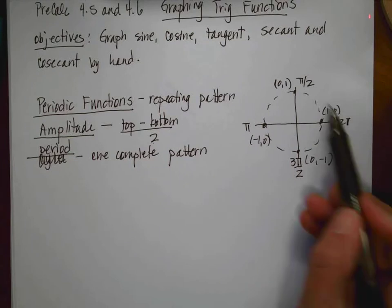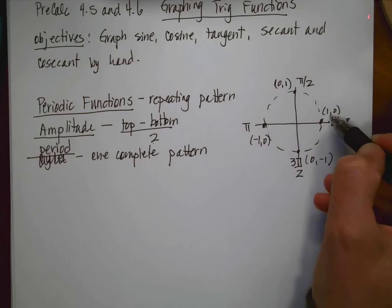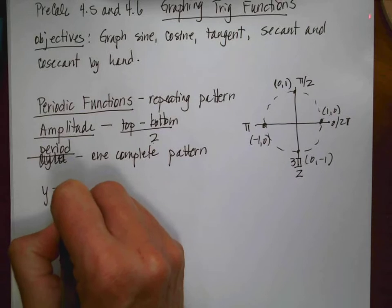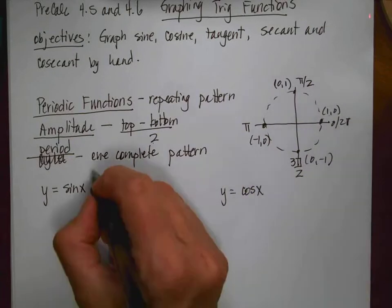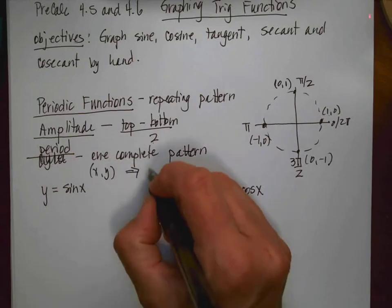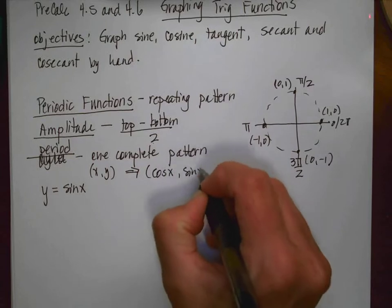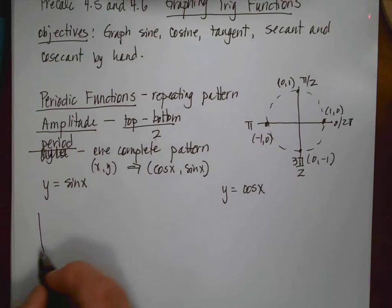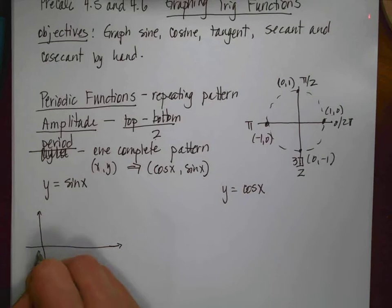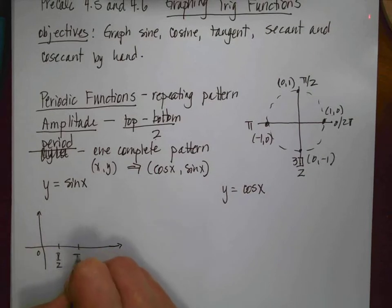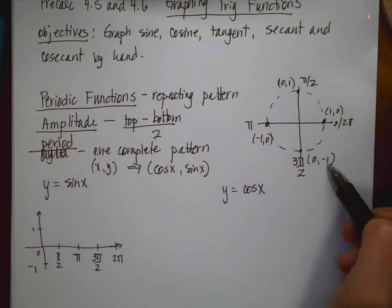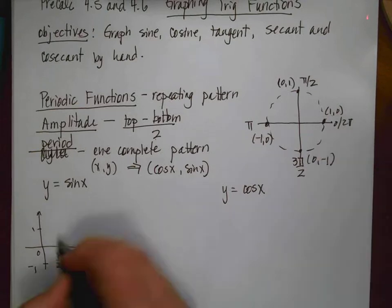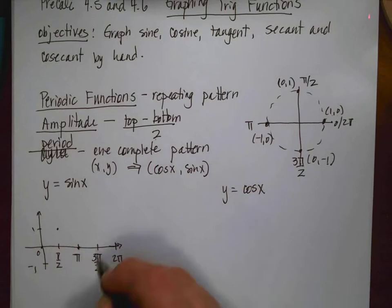I've drawn our basic unit circle and labeled the four quadrantal angles and their coordinates. If I want to graph y equals sine of x, I'm going to graph ordered pairs, because on the unit circle, the ordered pair (x, y) translates to cosine of x and sine of x. So for sine, putting the four quadrantal angles — 0, π/2, π, 3π/2, and 2π — the y-values are: 0, 1, 0, -1, and 0.